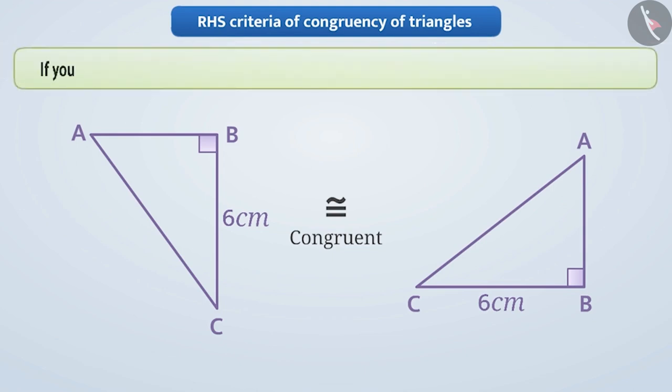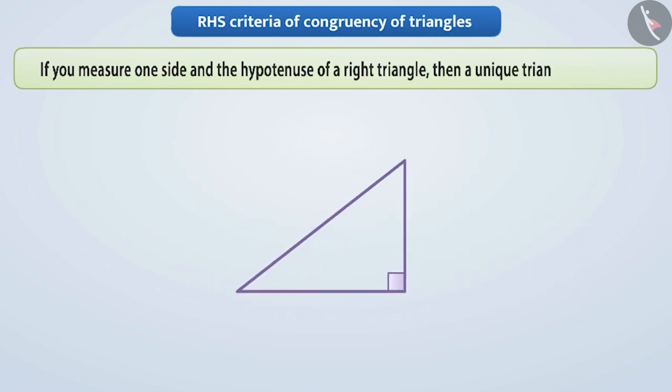From this we know that if the measurement of a side and hypotenuse of a right triangle is given, then a unique triangle is formed.